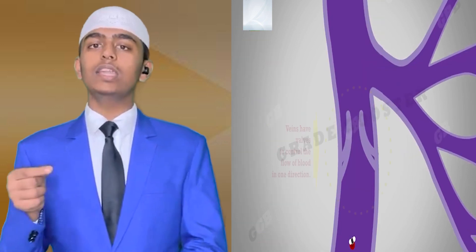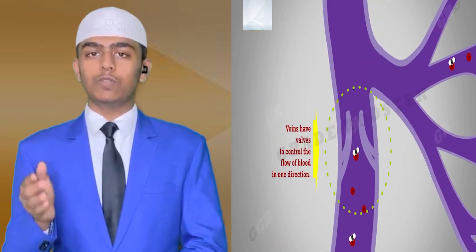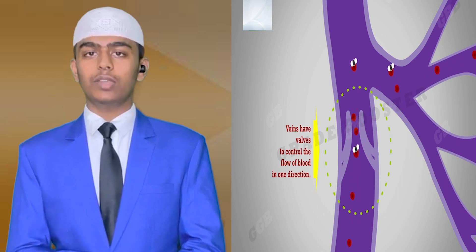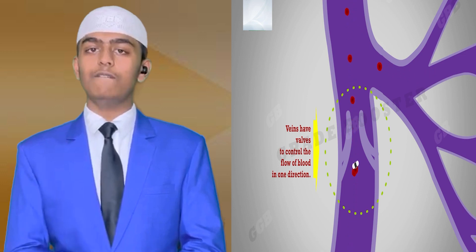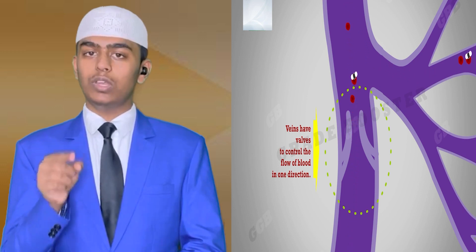Veins collect the deoxygenated blood from various parts of the body and bring it to the heart. They do not have thick walls because the blood is not under pressure, but they have valves to control the flow of blood in one direction.